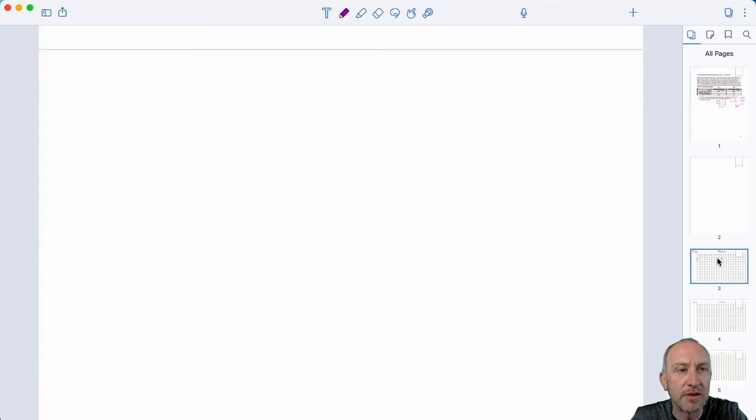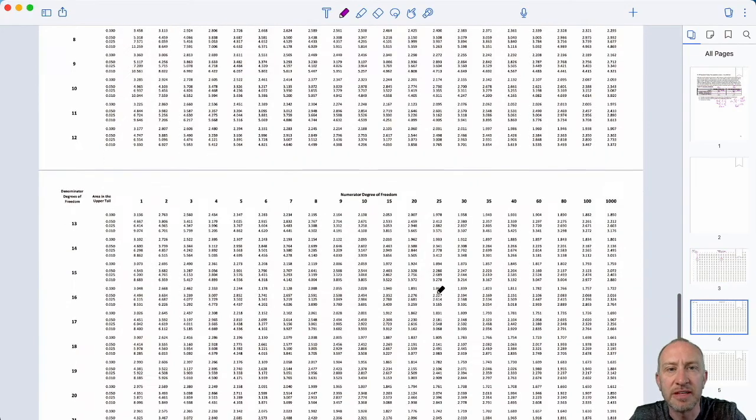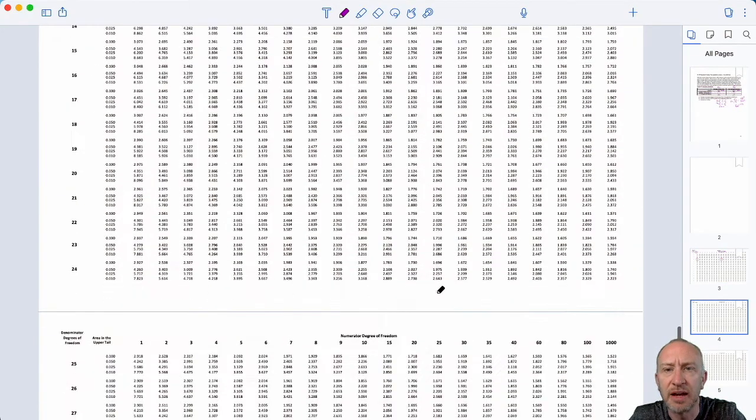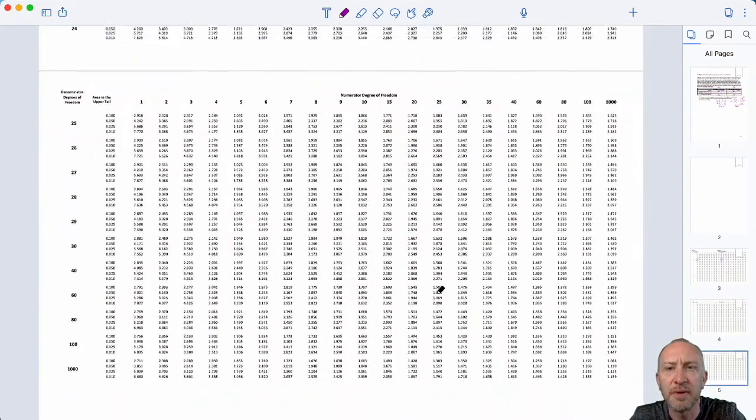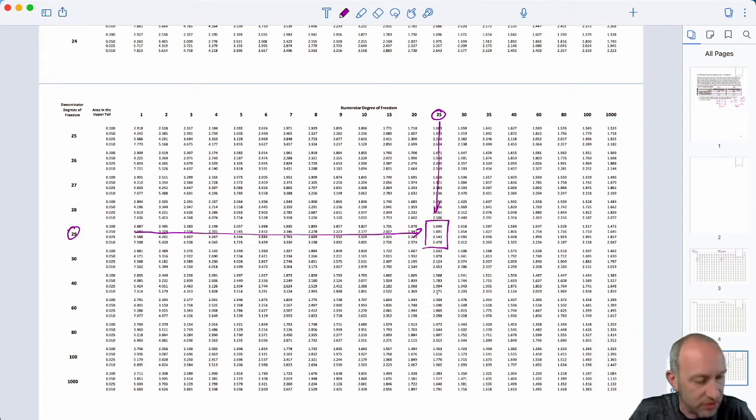So, I come down to my tables. Let's see. Numerator was 24. I'm going to round that to 25. Denominator was 29. And I'm probably going to have to round that too. Let's see. So, here's my 24, but we're going to round it to 25. And here's 29. So, where those come together, that gives us our four critical values.